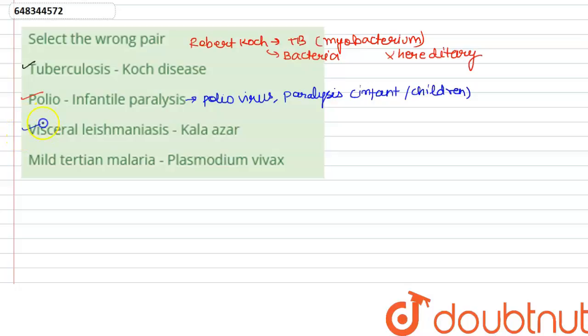Third one says visceral leishmaniasis with kala azar. This is also correct. Kala azar is also known as visceral leishmaniasis. This is caused by the vector sand fly, and kala azar is also known as black fever.